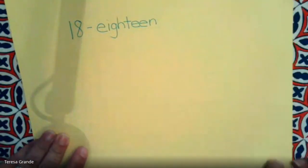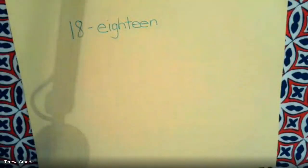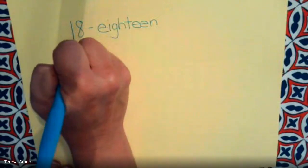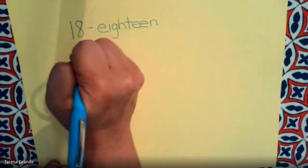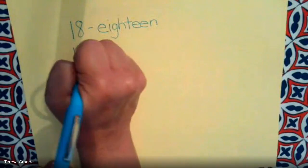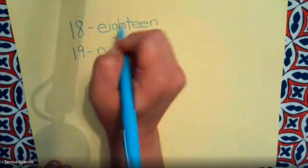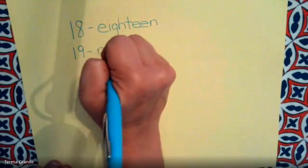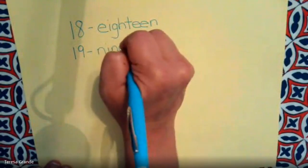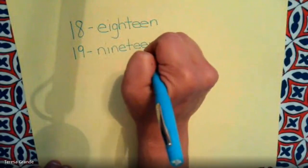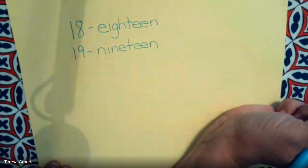Now, let's write the number 19. First, we have a 1 in the 10's place and a 9 in the 1's place. 19 is n-i-n-e-t-e-e-n, 19.